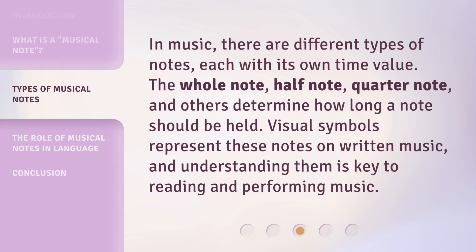In music, there are different types of notes, each with its own time value. The whole note, half note, quarter note, and others determine how long a note should be held. Visual symbols represent these notes on written music, and understanding them is key to reading and performing music.